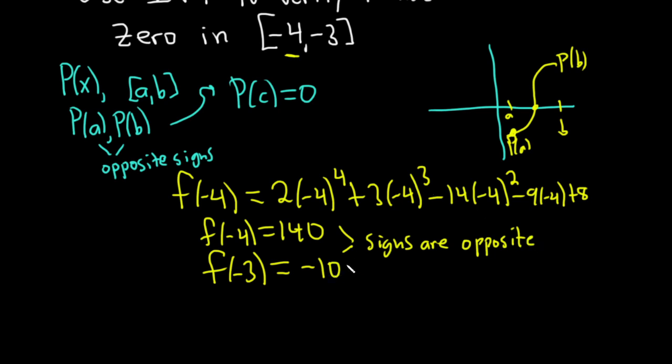It's probably not the best example because it's so messy. It kind of takes away from the main idea, which is that when a polynomial changes sign, it's going to be zero somewhere in the interval.